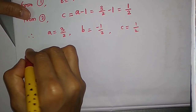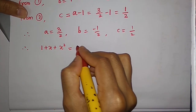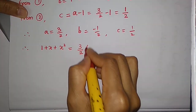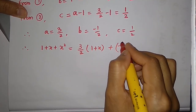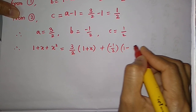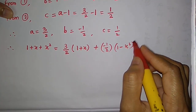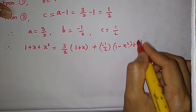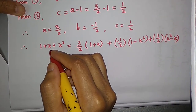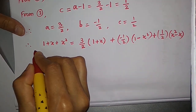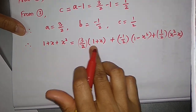Therefore, 1+x+x² = (3/2)·(1+x) + (−1/2)·(1−x²) + (1/2)·(x²−x). We have written 1+x+x² as a linear combination of (1+x), (1−x²), and (x²−x).